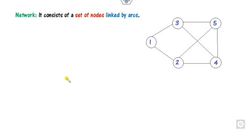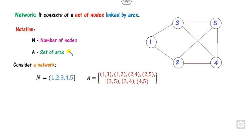We will quickly recall what a minimal spanning tree is and how we can analyze it. It is part of network analysis. A network consists of nodes — all those circles represent nodes — and the black lines are called arcs. The set of nodes linked by arcs: N is the number of nodes, A is the set of arcs, so arc 1-2, arc 1-3, and so on form the set of arcs.